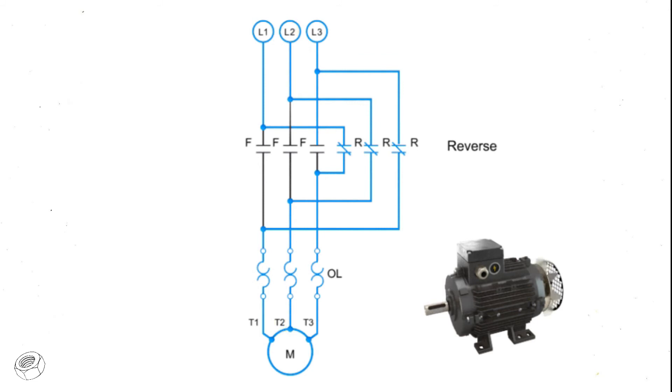This reversal of contacts will cause the motor to run in the opposite direction. Great care must be taken with forward and reverse circuitry, because if the forward and reverse contacts ever engage at the same time, it will cause a destructive and dangerous short circuit.